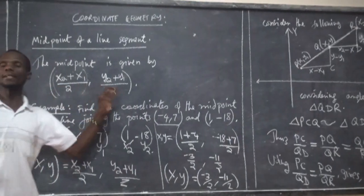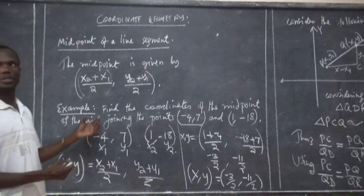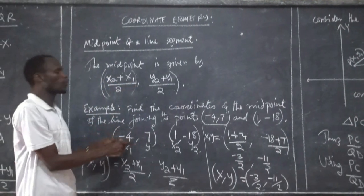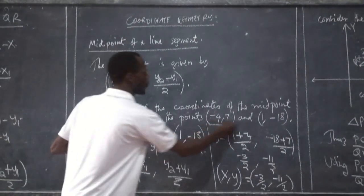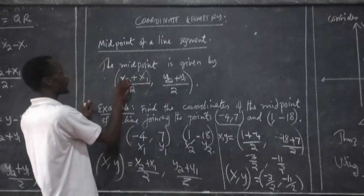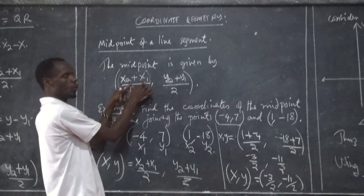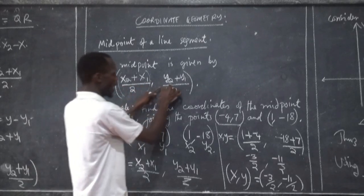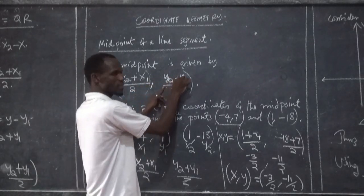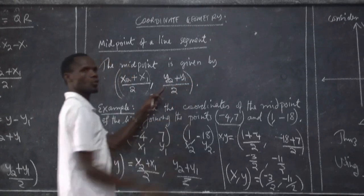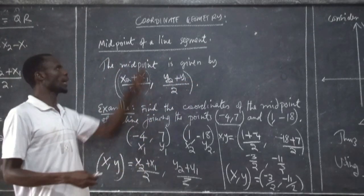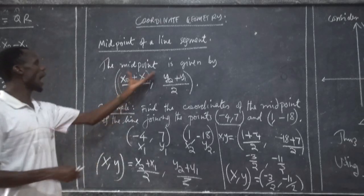In short, determining the midpoint is all about finding the sum of all corresponding coordinates. Given two points, we find the sum of X1 and X2 over 2, comma Y2 plus Y1 over 2. This is how we determine the midpoint of a line segment.